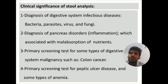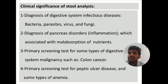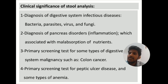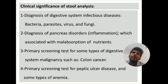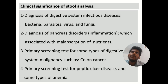Next, stool analysis is used for diagnosis of pancreas disorders and inflammation associated with malabsorption of nutrients. It is also used for primary screening for digestive system malignancies such as colon cancer, colorectal cancer, and inflammatory bowel disease. Additionally, it is a primary screening test for peptic ulcer disease and some types of anemia, where blood may be seen in the feces.